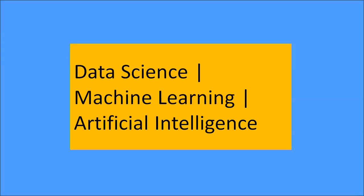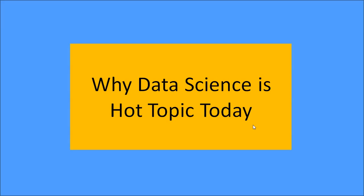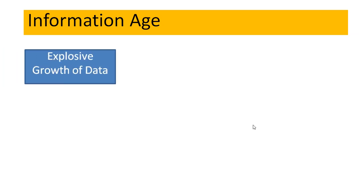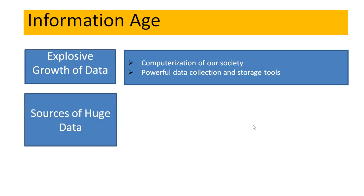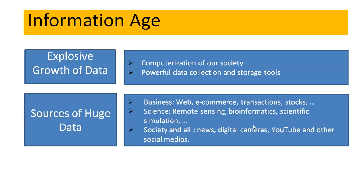Let us get started with why data science is a hot topic today. In this information age, number one, there is an explosive growth of data due to computerization of our society and fast development of powerful data collection and storage tools. Number two, there are multiple sources of huge data available — data from businesses like web, e-commerce, transactions, stocks; data from science like remote sensing, bioinformatics, scientific simulation; and data from society like news, YouTube, and other social media.